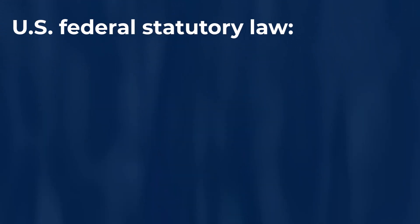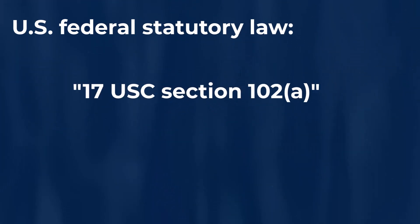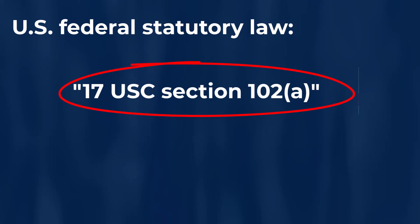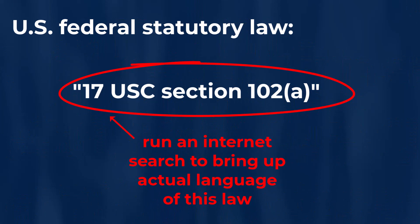The U.S. federal law noted in the introduction is called Title 17 of the United States Code, Section 102, Subpart A, and is generally abbreviated as shown here on your screen. This particular U.S. federal statutory law sets forth eight categories of different types of creative works that may generally be protected by U.S. copyrights. If you enter 17 USC Section 102 Subpart A into most any internet browser search engine like Google, you can quickly find and see the actual language for this particular law.